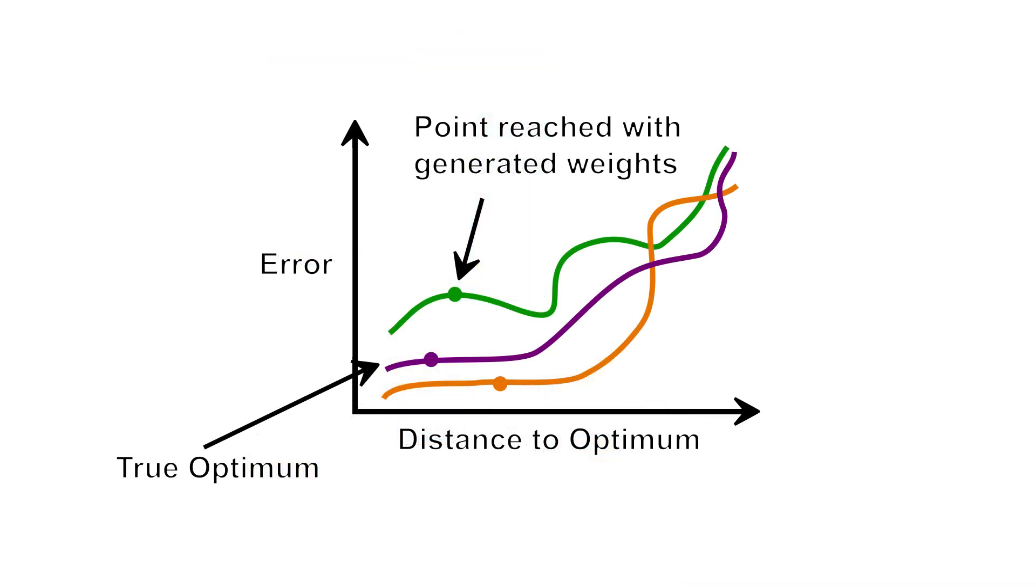While the hypernet never learns to generate weights that are quite as good as if we trained them normally, the weights are sufficiently close to optimal that we can plug them in and determine the relative quality of any sampled architectures.